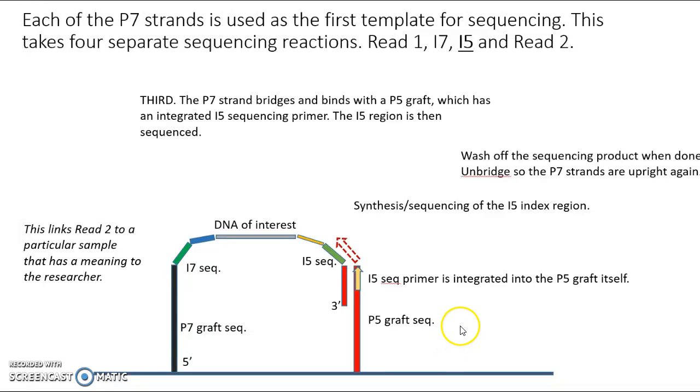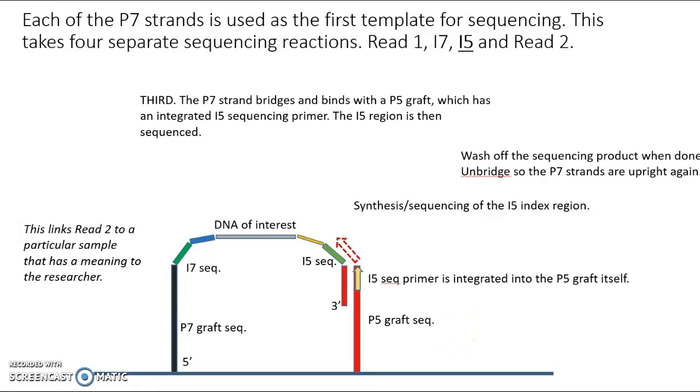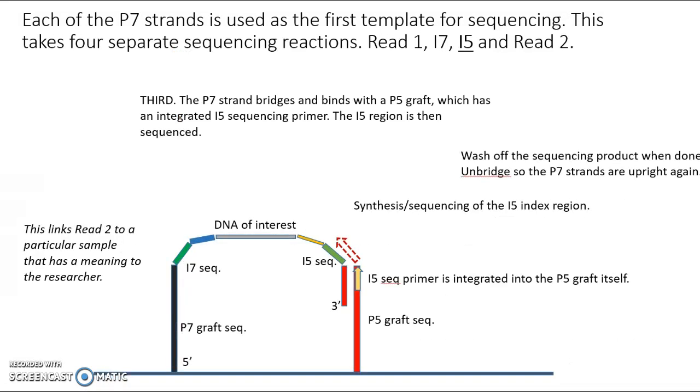All right, what next? And then things get slightly more complicated looking. So just going back up here, remember that these sequences at the end are complementary to the P5 graft. So we take advantage of that. And what we do is we change conditions so that bridging happens again. So complementary base pairing happens here. And then I had said earlier that the I5, the index sequence 5, is actually integrated right into the P5 graft. So we don't have to add anything. It's already built in. And then we have sequencing by synthesis happening here. And so that's going to give us index number 5 sequence.